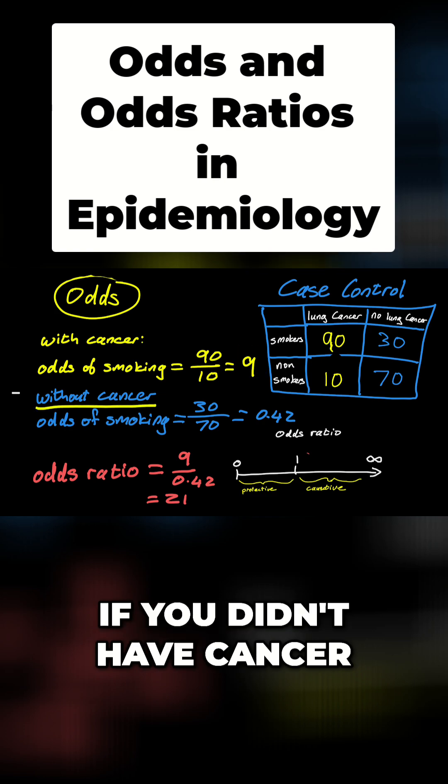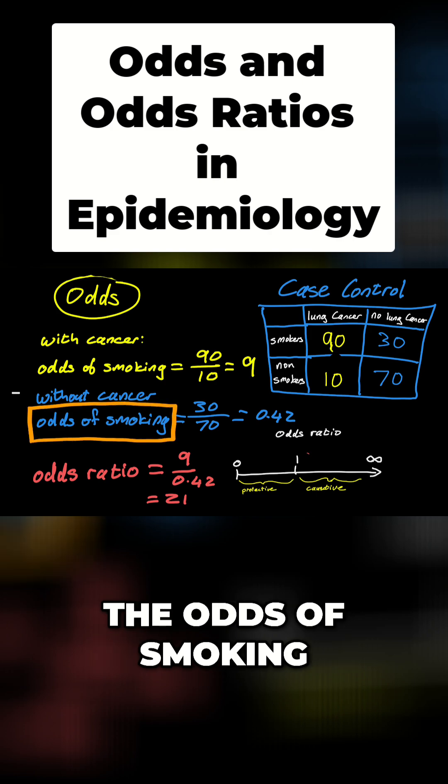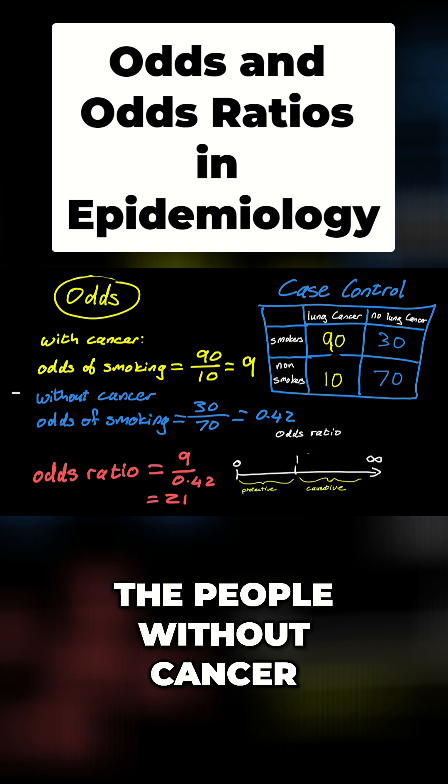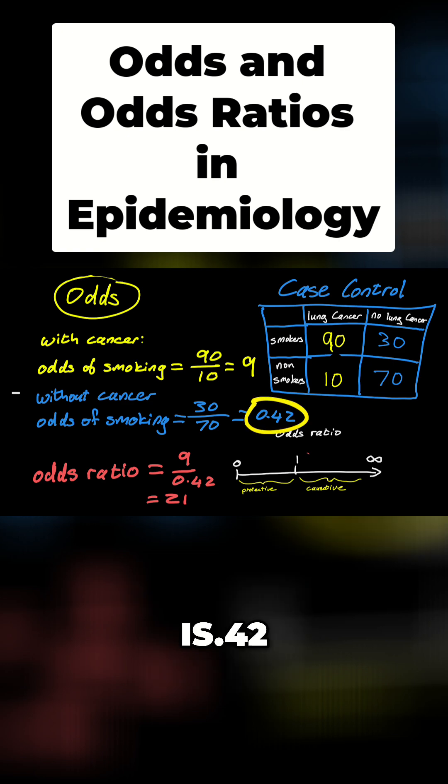If you didn't have cancer, the odds of smoking were 30 over 70. So the odds of being a smoker in the people without cancer is 0.42.